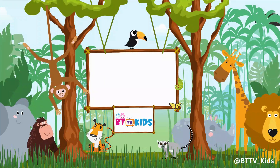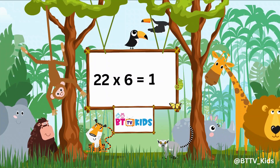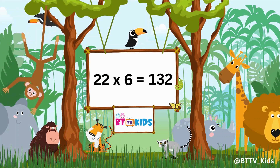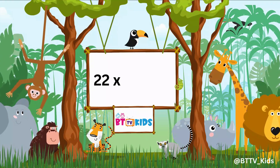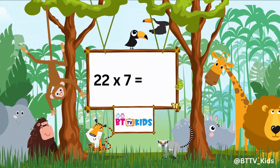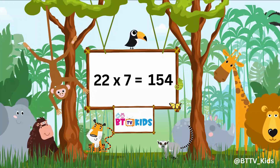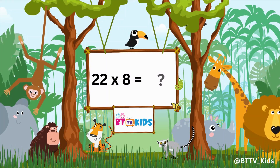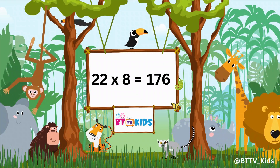Twenty-two sixes are one hundred thirty-two. Twenty-two sevens are one hundred fifty-four. Twenty-two eights are one hundred seventy-six.